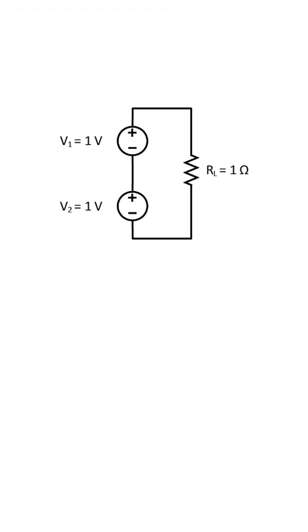You can use superposition to find voltages and currents, but not power. Here we have two voltage sources and a resistor.